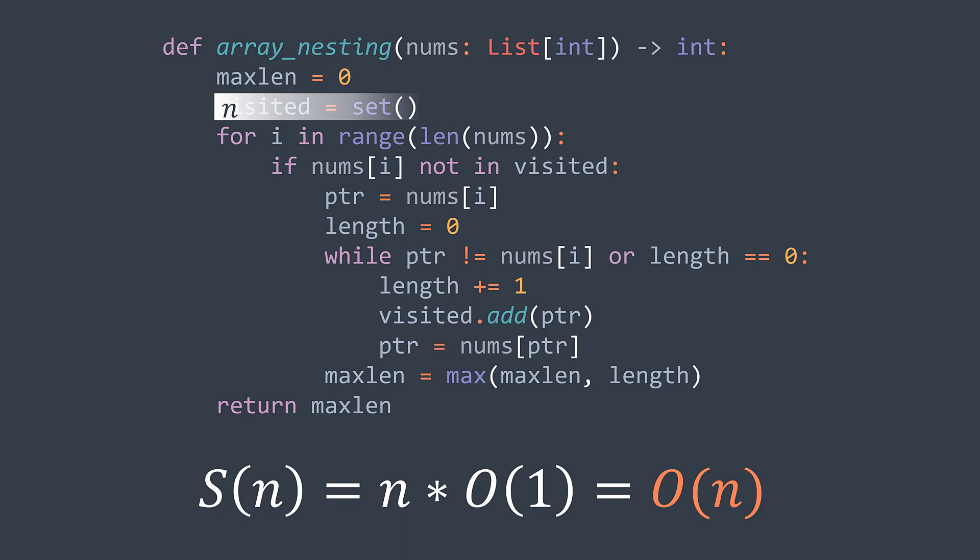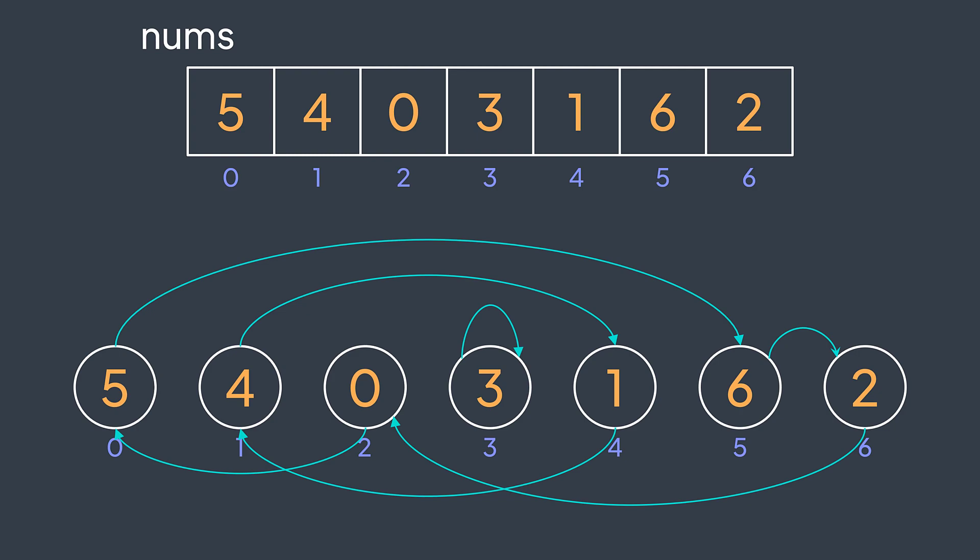We can also think of a solution with another way. Let's represent the elements of the array as a graph where vertices represent the elements and an edge from a to b means that b is the element that comes after a in the sequence. Here five points to nums[5], which is six, four points to nums[4], which is one, zero points to nums[0], which is five, and so on.